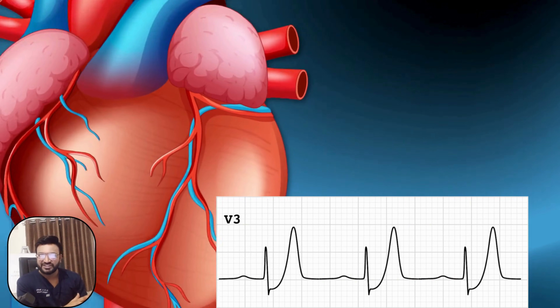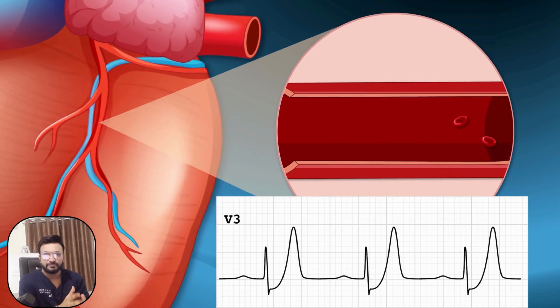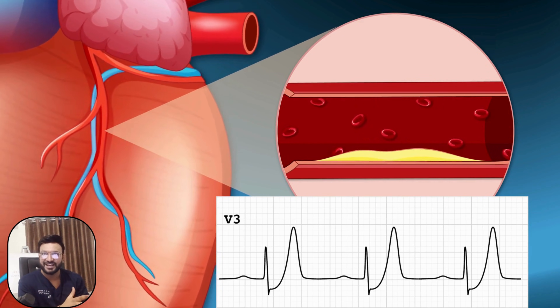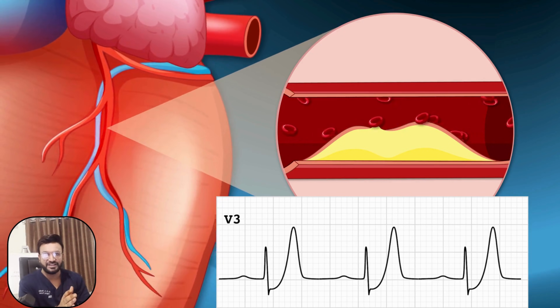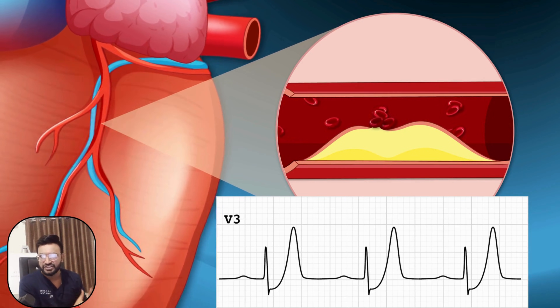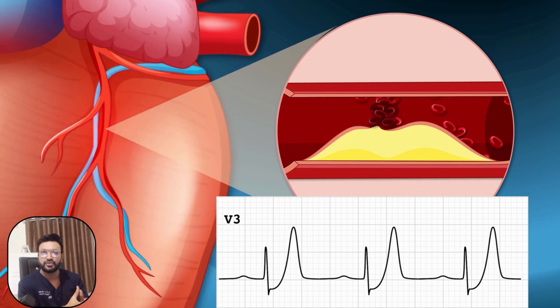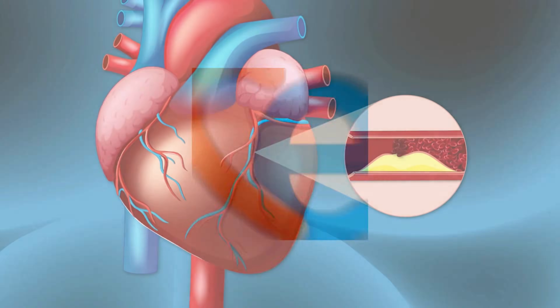To recap: the De Winter pattern is a STEMI equivalent. The LAD is still blocked. There are tall symmetrical T waves and upsloping ST depression. As soon as we see that pattern, we need to act fast — spot it and immediately alert the cath lab. That's the only way we can save these patients.